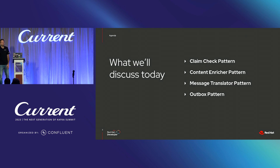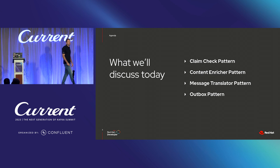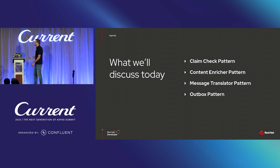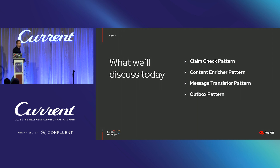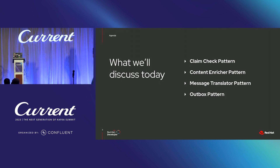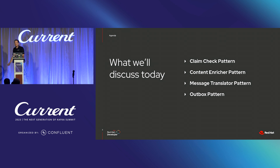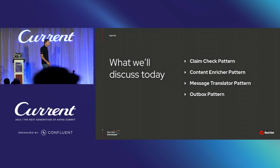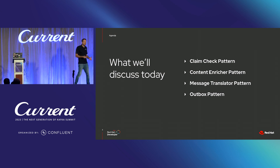Let's take a quick look at today's agenda. We are mainly focusing on four patterns: we start with the claim check pattern, then continue with the content enricher pattern, switch to the message translator pattern, and finally explain the outbox pattern. For each pattern I'll use the same structure: first framing the challenge, then discussing a basic hypothetical use case, and finally showing a quick demo scenario to understand how to implement those patterns with Apache Kafka.